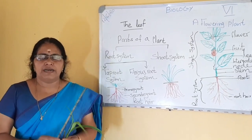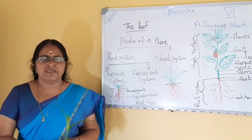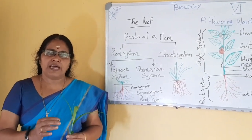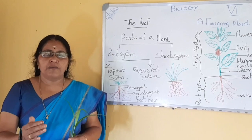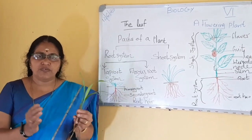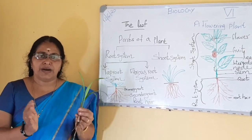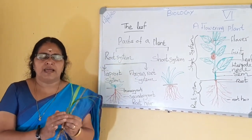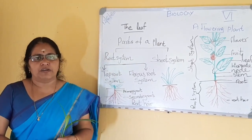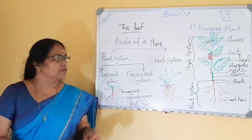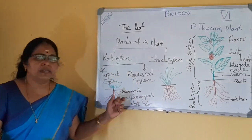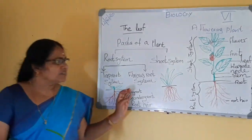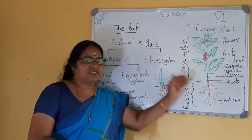Thus, the roots prevent soil erosion. You learned in the lower classes that to prevent soil erosion, we have to plant a lot of plants. So, the roots of the plant bind the soil particles together and prevent soil erosion. That's all about the root system. Next is the shoot system.